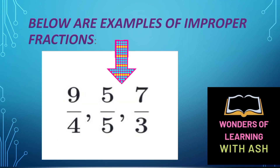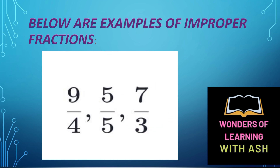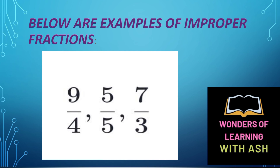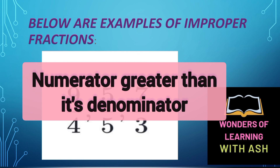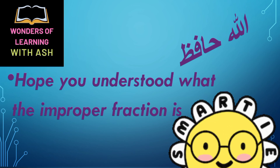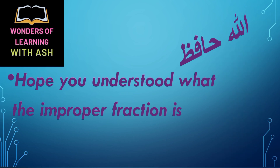Here are more examples of improper fractions: 9 by 4, 5 by 5 which equals 1 whole, and 7 by 3. These are all examples of improper fractions. Remember, in an improper fraction the numerator is always greater than or equal to the denominator. I hope you understand improper fractions. In the next video, please like and subscribe. Allah Hafiz.